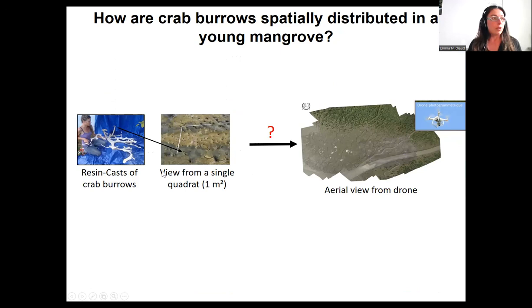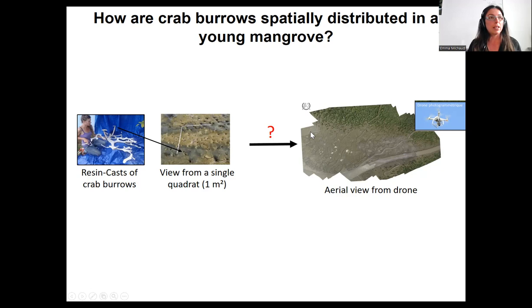Because spatial distribution of burrows is very heterogeneous at the mud flat scale, it is not possible from a single quadrat to get a general overview of distribution along the mud flat. That's why we tried to work with a drone to get an aerial view. A colleague from CEREGE in Aix-en-Provence joined us in French Guiana and the drone covered the entire surface of the mangrove.